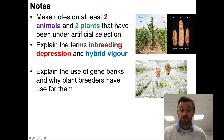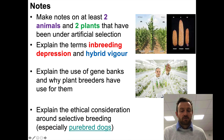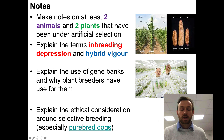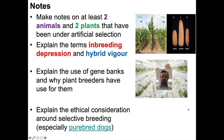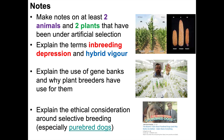Finally, explain one of the ethical considerations around selective breeding, especially to do with purebred dogs. There's a video link here — about four or five minutes long, a humorous video but with a lot of good science — called 'The Bizarre Truth About Purebred Dogs.' I'll put the link in the video description. Watch that video, make those notes, and then come back.